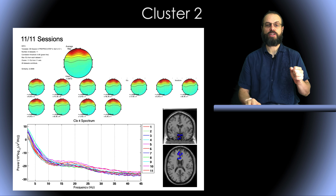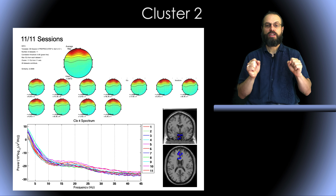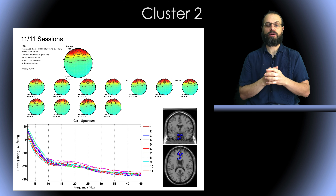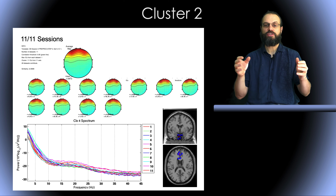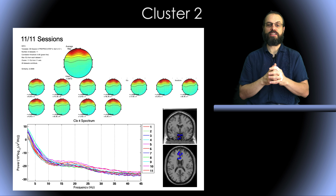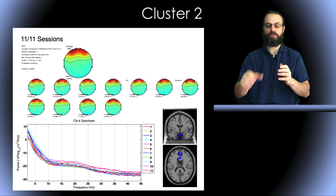Here is another example — these are the blinks. You can see very similar components across the 11 sessions recorded on different days from this subject. The power spectrum is very similar, and the localization as well.